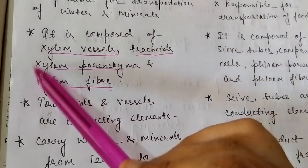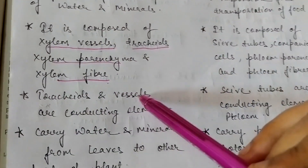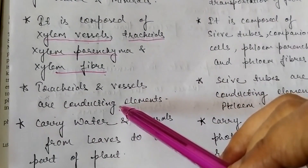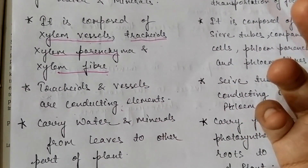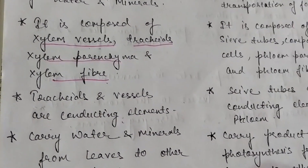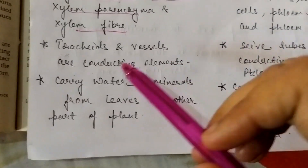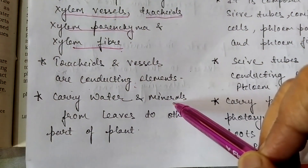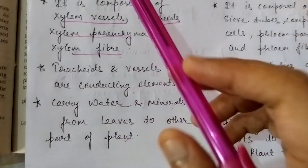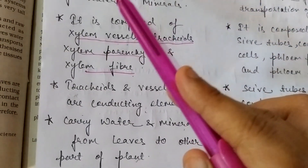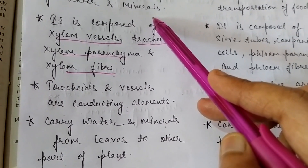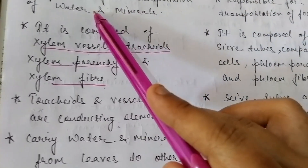Out of these four, tracheids and vessels are the conducting elements — they conduct and transport water and minerals from one place to another. The function of xylem is to carry water and minerals from roots to other parts of the plant. So xylem is responsible for the transportation of water and minerals.